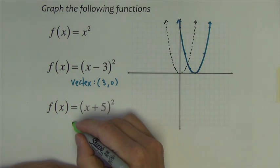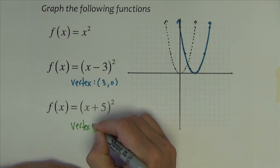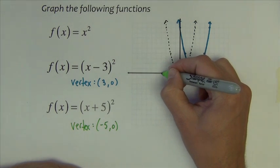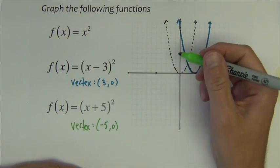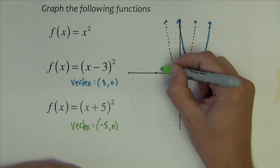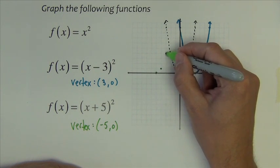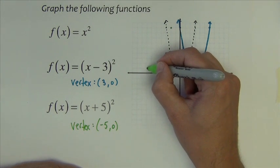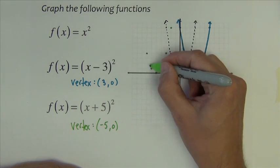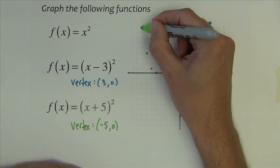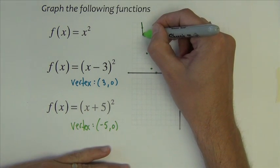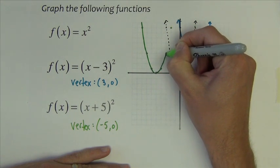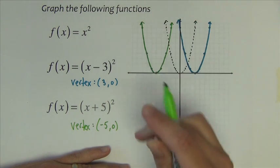The next one, (x + 5)² quantity squared. The vertex is at the point (-5, 0). So 1, 2, 3, 4, 5. And then I just do my squaring pattern: 1 squares to 1, 2 squares to 4, 3 squares to 9, on both sides.